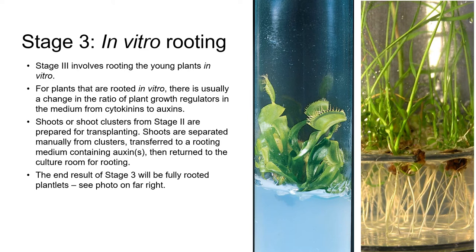Let's look at stage three now. At the end of the stage two multiplication stage, there are many young plantlets, but they don't have roots yet. Let's assume the plants are Venus flytraps — in that case they might look something like this slide, with a lot of vegetative growth but no roots in the agar medium. The next stage, stage three, involves rooting the young plants in vitro.